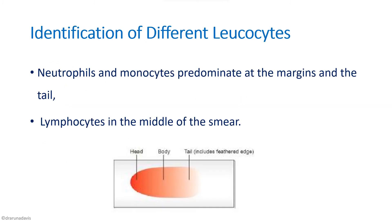In the smear there are specific regions for each group of WBCs. Neutrophils and monocytes will be near the margins as well as the tail region of the smear, whereas the middle portion will be occupied by the lymphocytes. So if you are searching for lymphocytes, search the middle part, whereas neutrophils and monocytes will be in the margins and periphery.